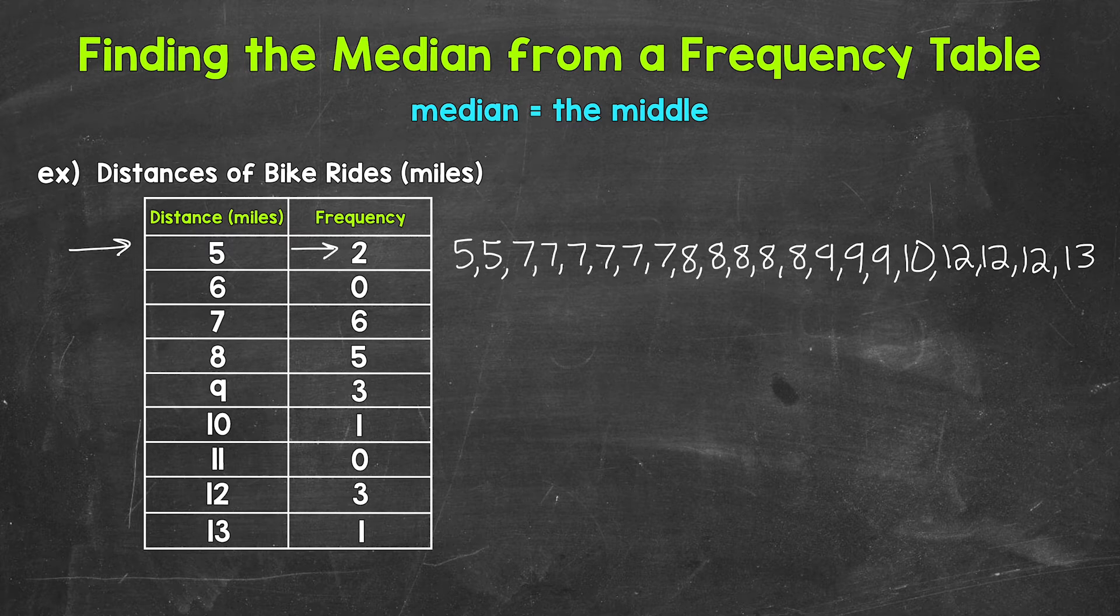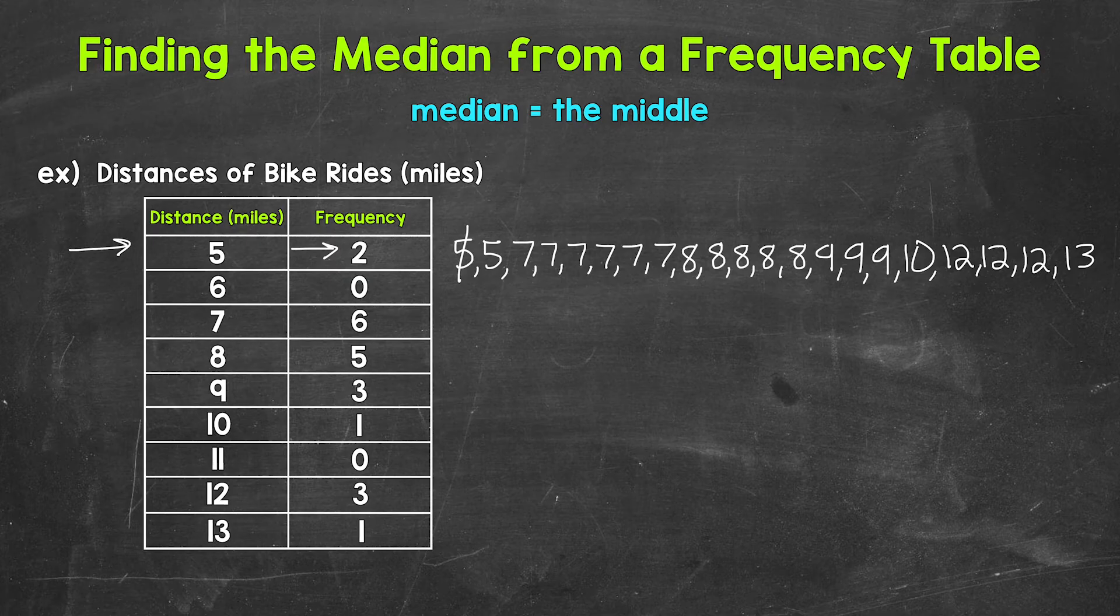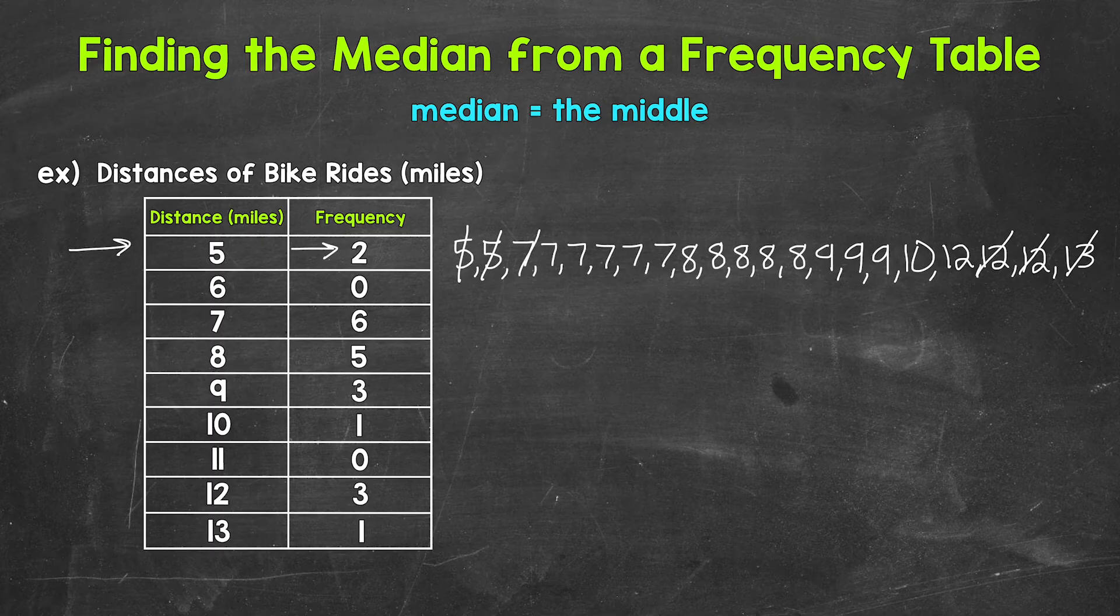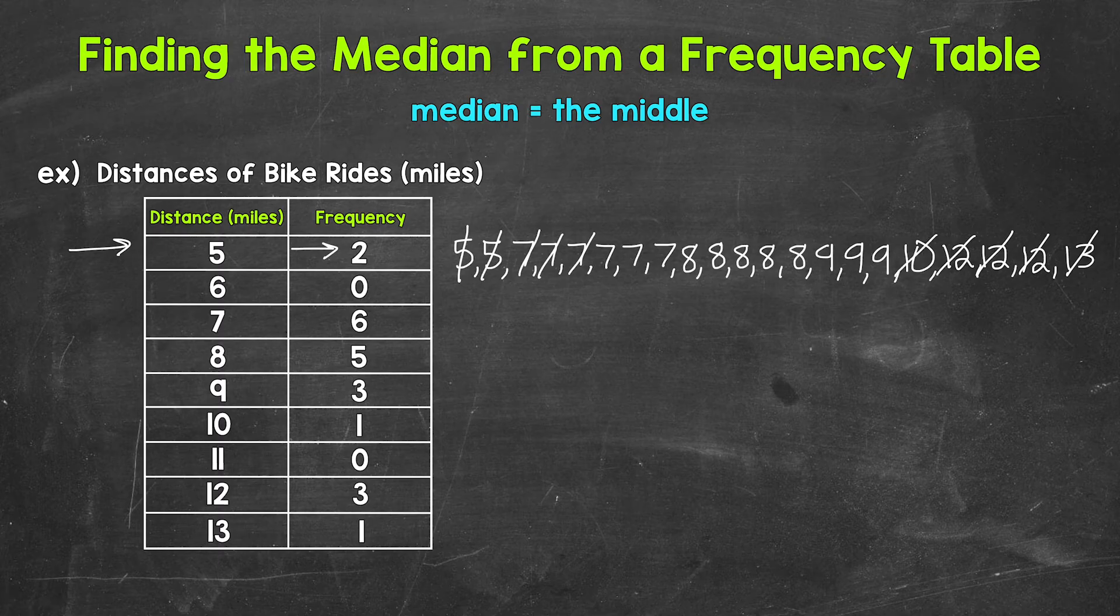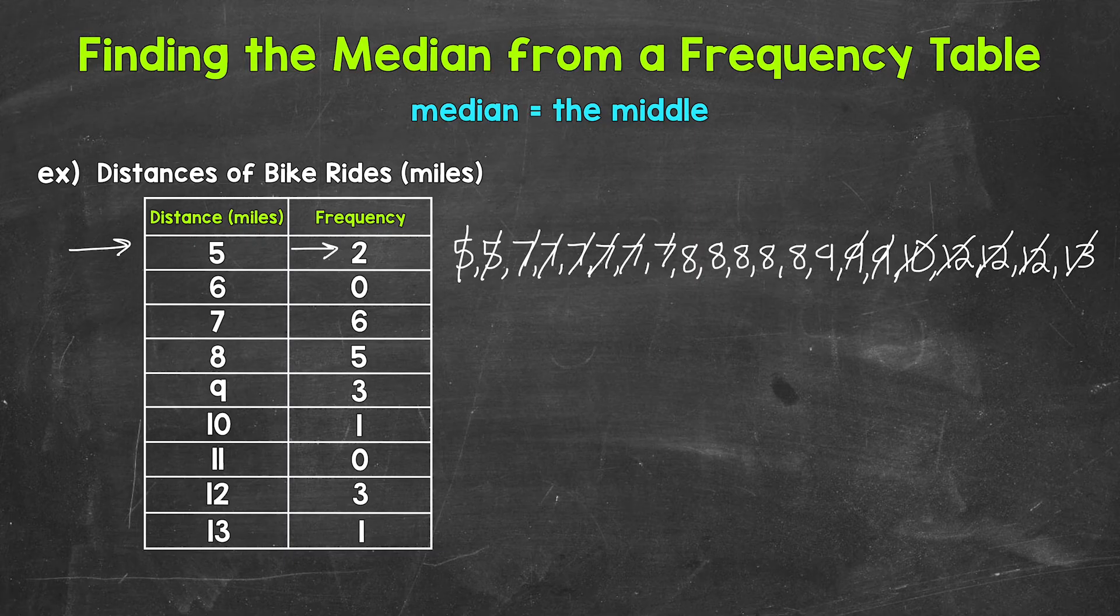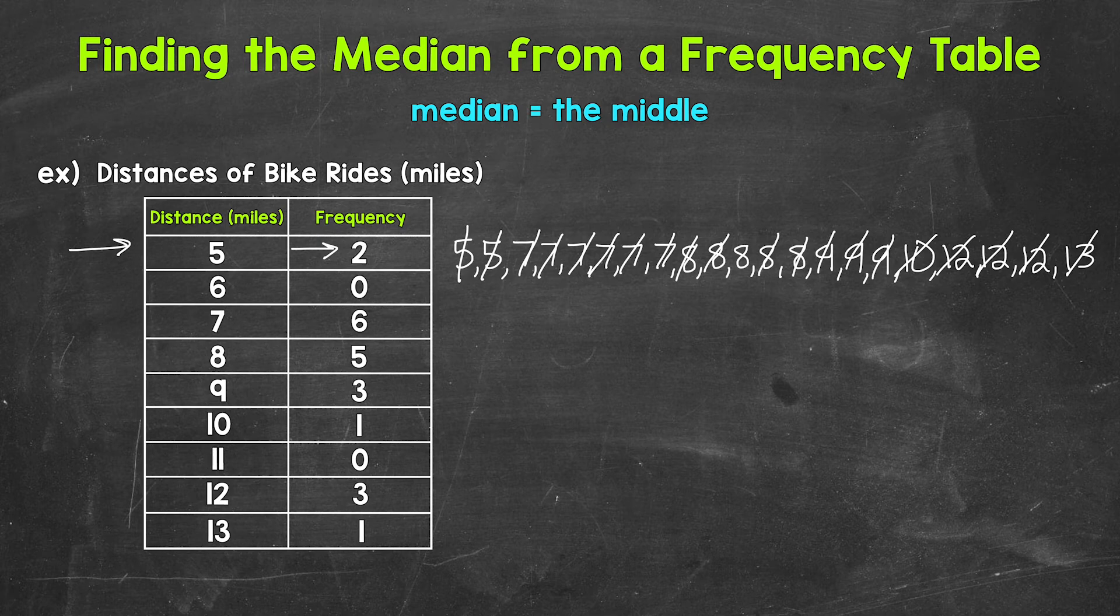One way we can do this is by counting off on each side until we reach the middle. So let's do that. 1, 1, 2, 2, 3, 3, 4, 4, 5, 5, 6, 6, 7, 7, 8, 8, 9, 9, 10, 10. And we have an 8 in the middle.